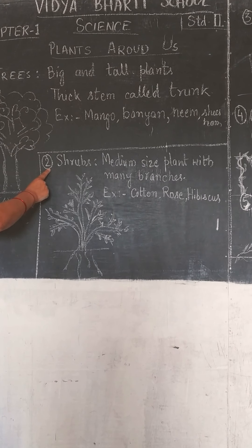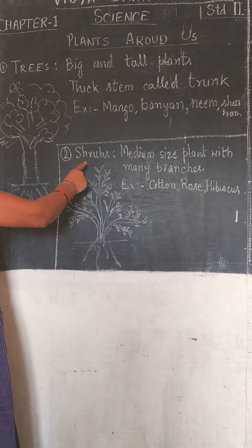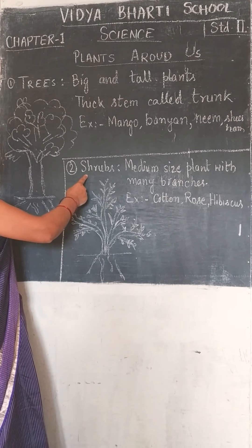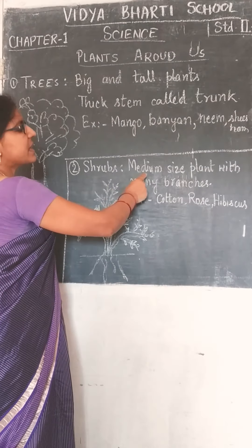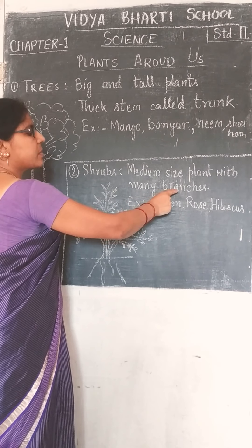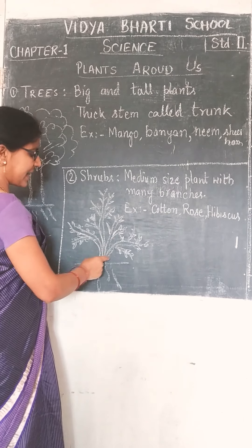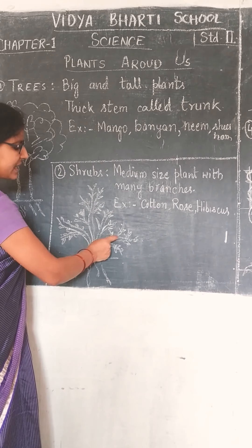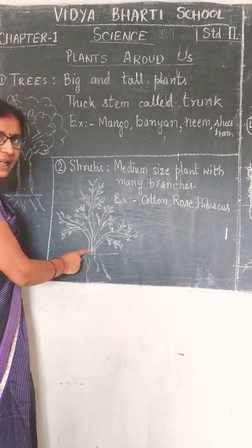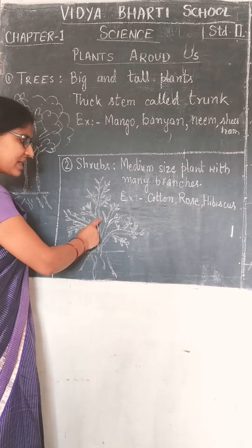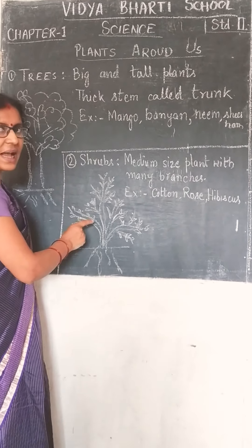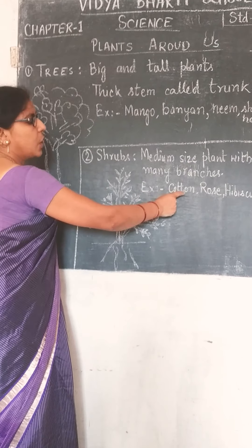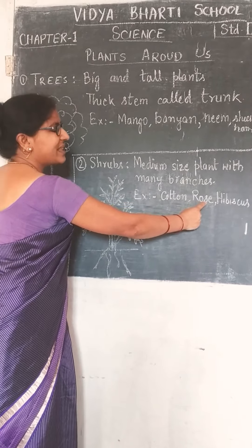और second type of plants है Shrub यानि झाड़ियां. Medium-sized plants with many branches are called shrubs. मध्यमाकार के पौधे जिनमें एक मुख्य trunk नहीं होता है, बल्कि उसके आधार पर बहुत सारी डालियां निकली होती हैं - एक ही जगह से बहुत सारी डालियां निकली होती हैं. एक मोटा तना यानि trunk नहीं होता, branches बहुत सारी होती हैं और ये medium size का होता है.